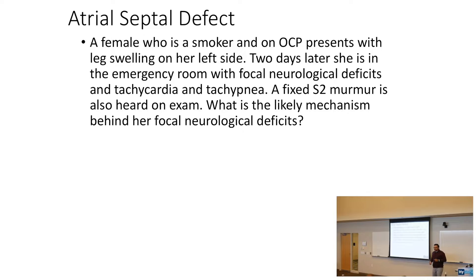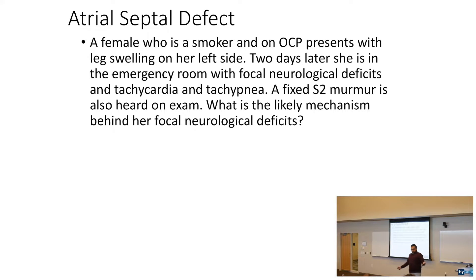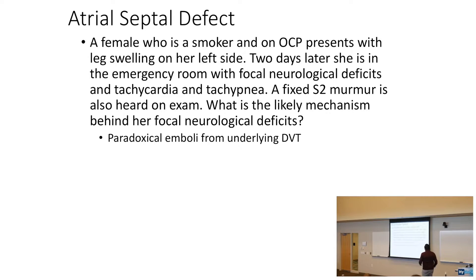What happened? Clot in the leg traveled up, boom, into the brain. This is a paradoxical embolism from an underlying DVT. The right-sided circulation carried the clot, there was a hole in the heart, and it went up to the brain.